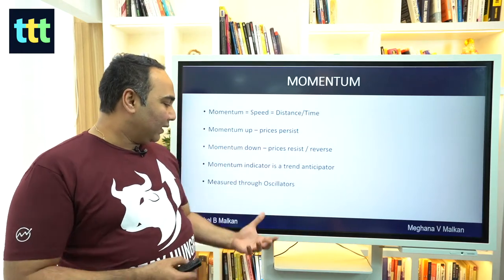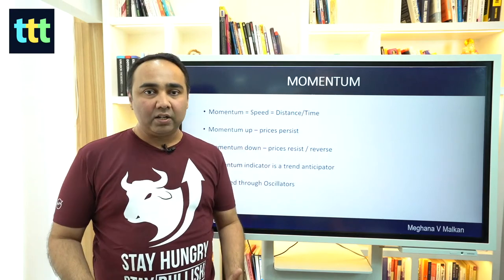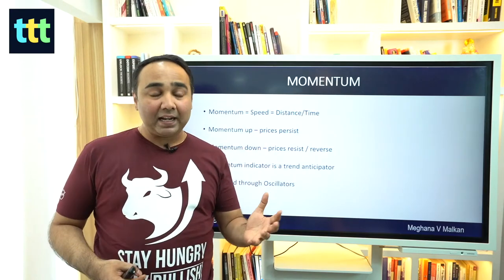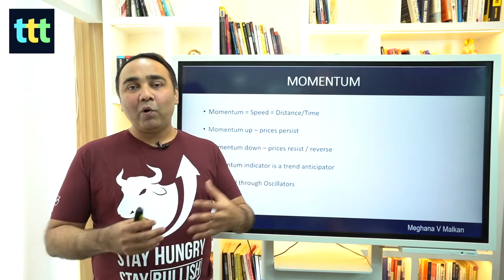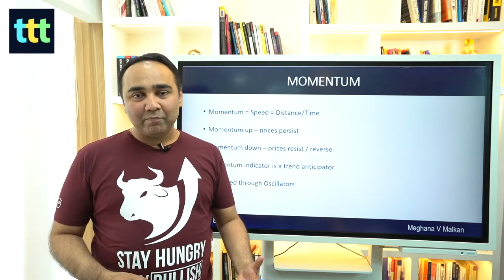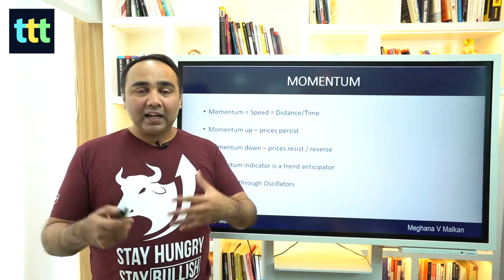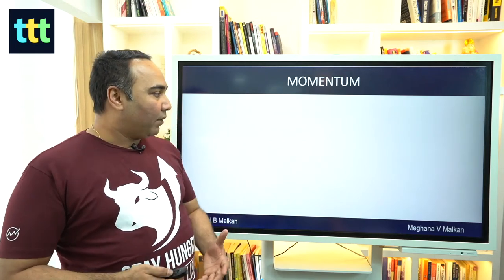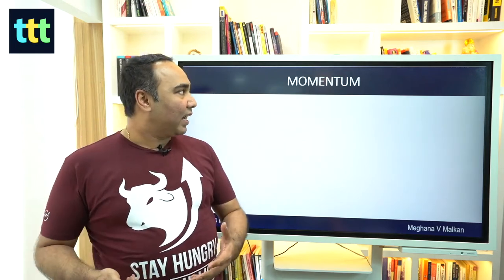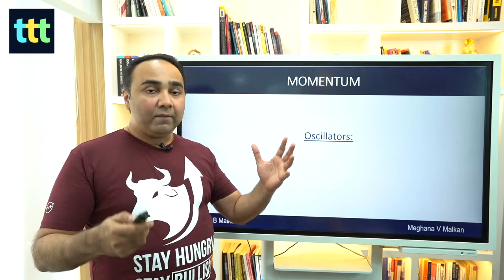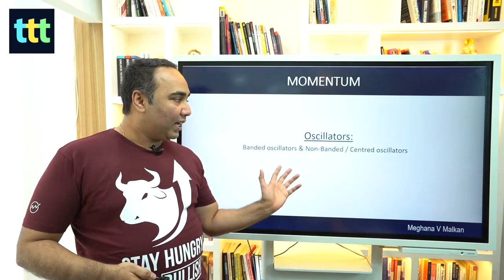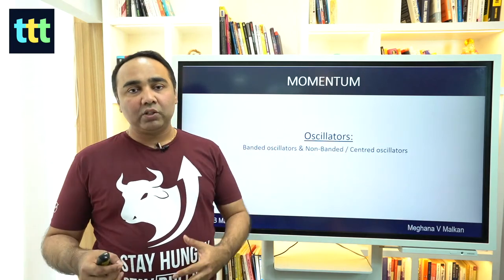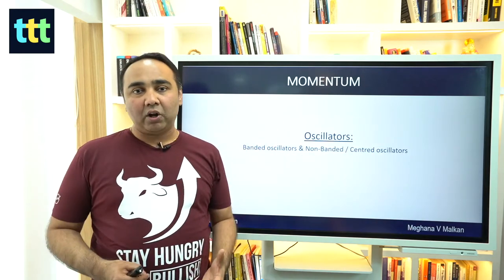Momentum is measured through oscillators. Just like we have a speedometer in a car, we have oscillators in the market. There are different types — let's talk about banded oscillators and non-banded oscillators, also called centered oscillators.